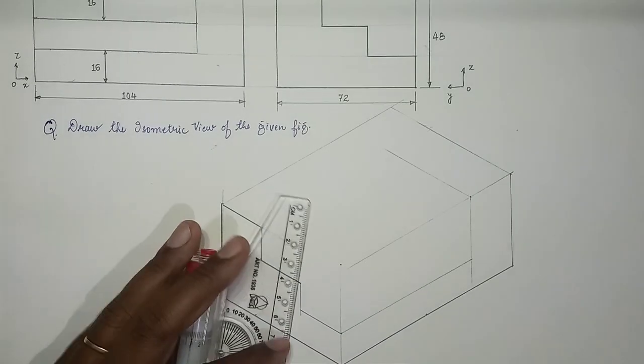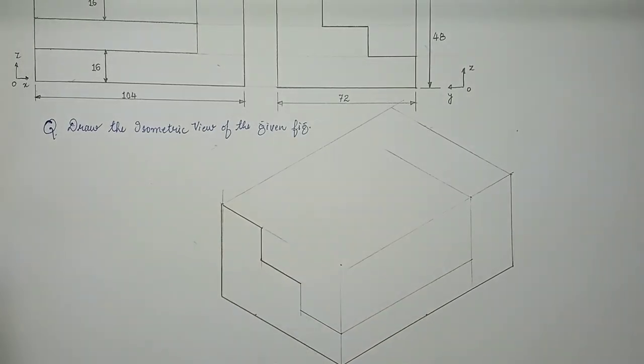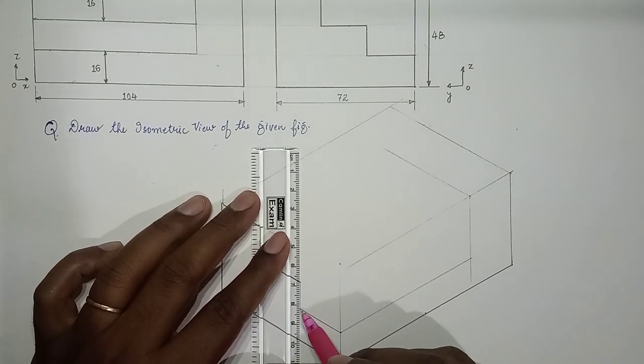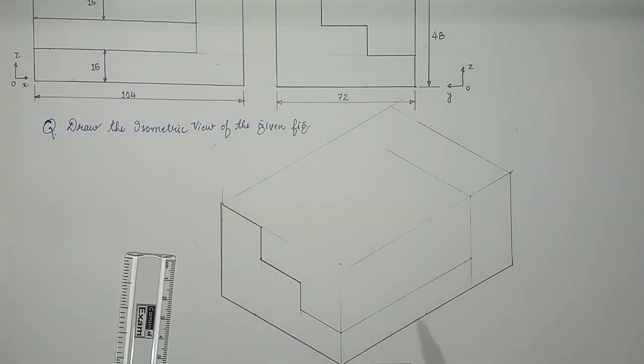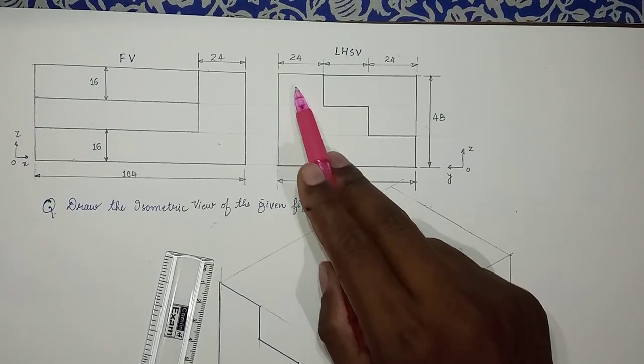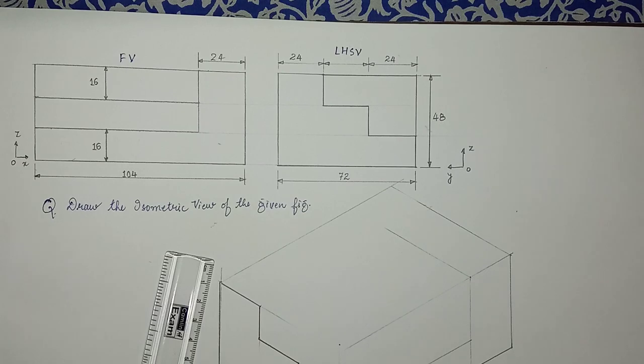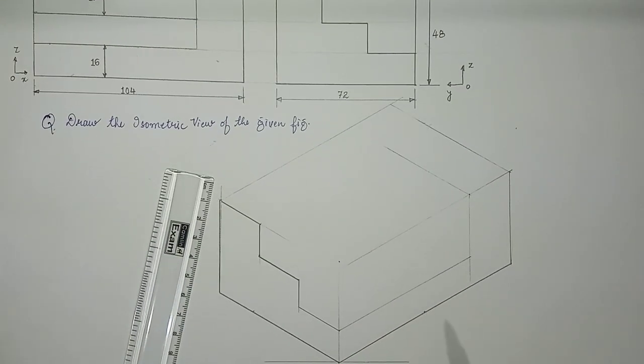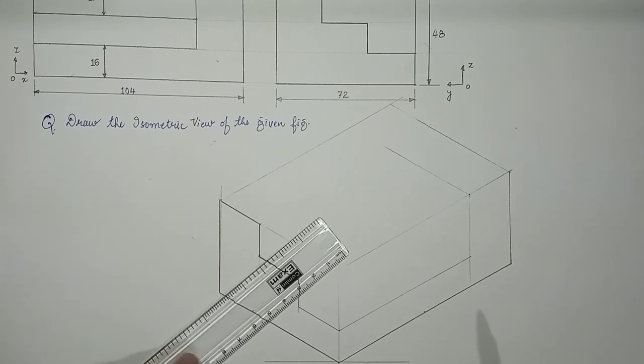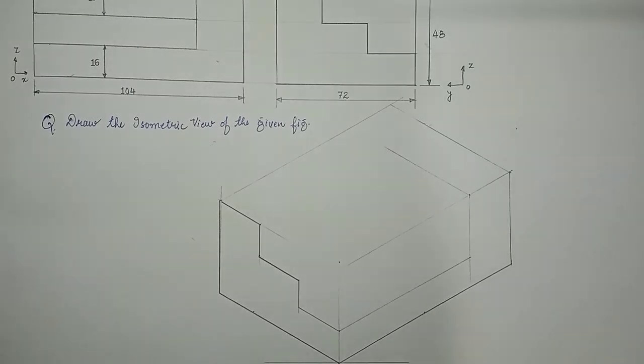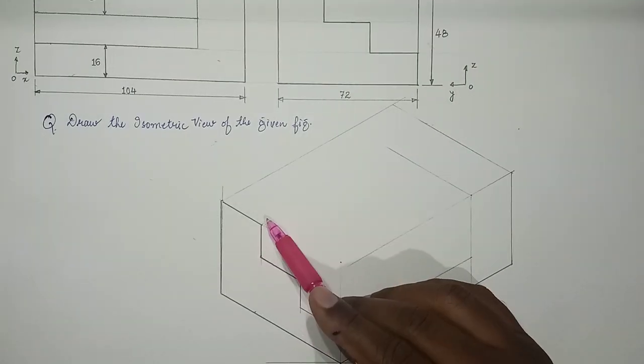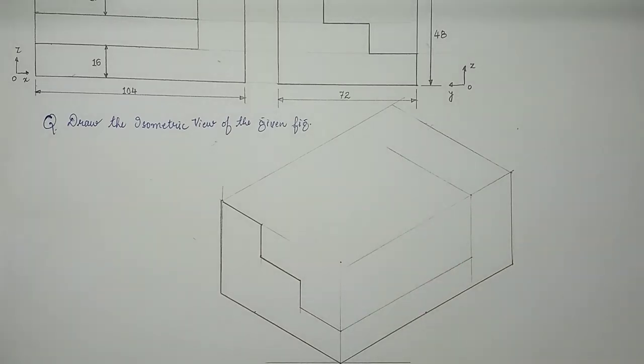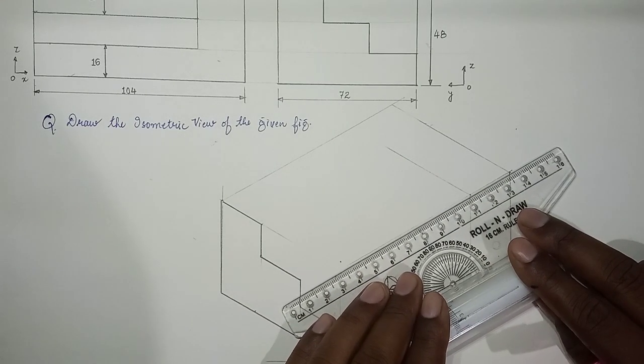So we get a step like this. So it's clear here, a step is visible in the side view. This is 24, and we can make use of roller scale.